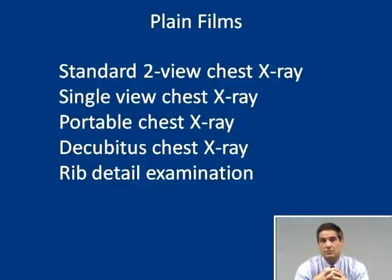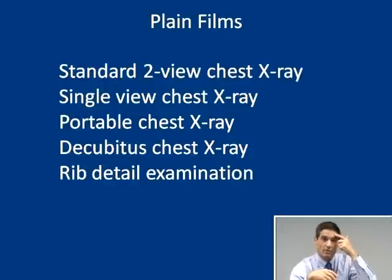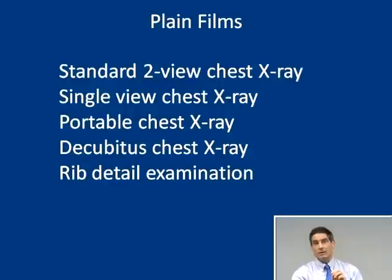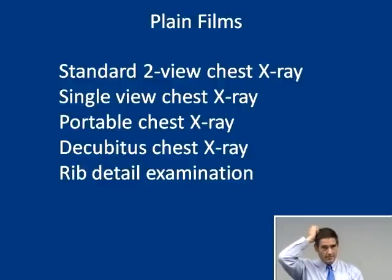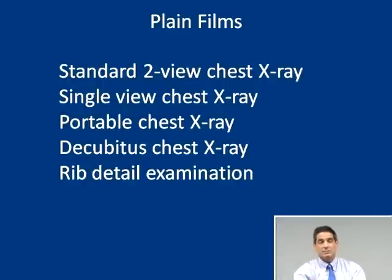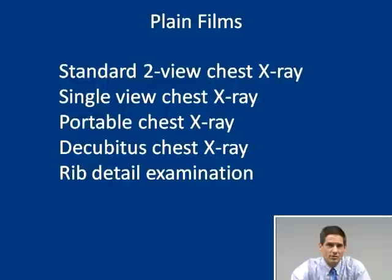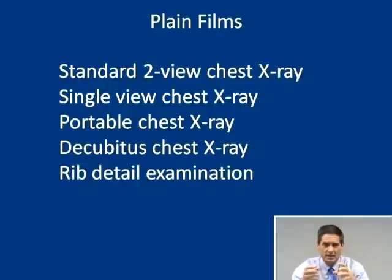Rib detail exams are used specifically to detect broken ribs or rib lesions with higher detail. Standard chest x-rays are technically optimized to evaluate lung parenchyma and mediastinum, shot at higher kV, which tends to burn out the ribs. Rib detail films use lower kV and multiple projections, since the whole arc of the rib can be difficult to see on any one projection. If it's important to know whether a patient has a rib fracture, rib detail films are what you want.